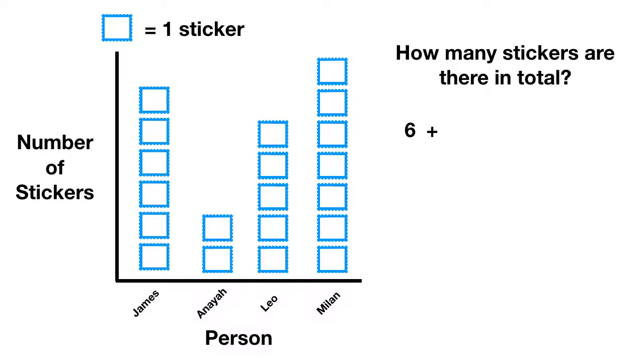Then you'd add in Anaya with one, two. Then you'd add in Leo with one, two, three, four, five. And finally, you'd add in Millen, one, two, three, four, five, six, seven. When you add up all four of these numbers, you find that there are 20 stickers in total.